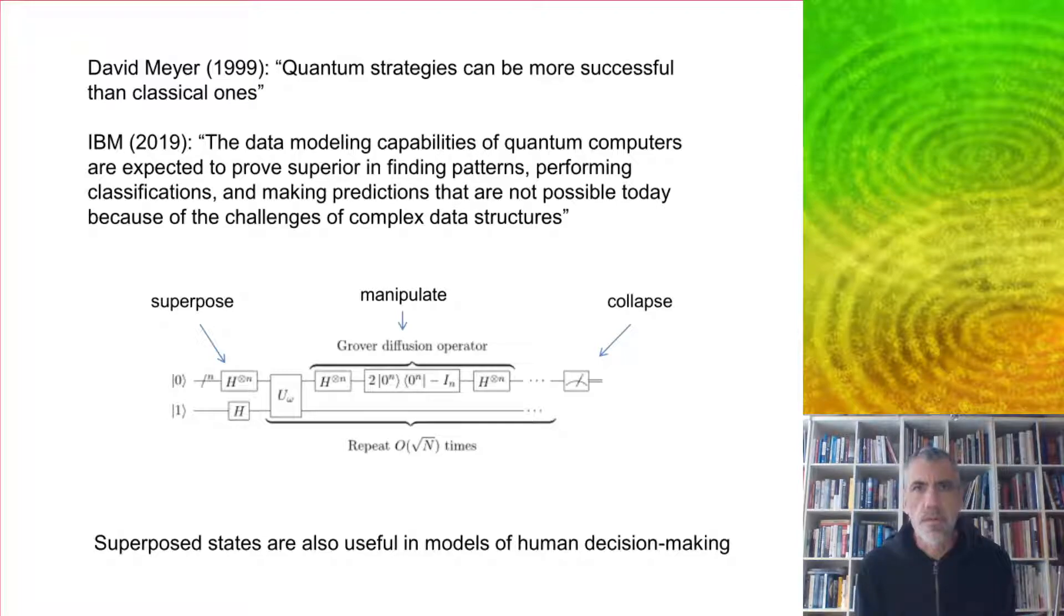This was pointed out by David Meyer, who invented this game back in 1999. He pointed out that quantum strategies can be more successful than classical ones. And that's proven to be very true some 20 years later. For example, IBM in a report pointed out that the data modeling capabilities of quantum computers are expected to prove superior in finding patterns, performing classifications, and making predictions that are not possible today because of the challenges of complex data structures. The reason for this is that quantum computers get vastly stronger computational power because they can play these quantum tricks.